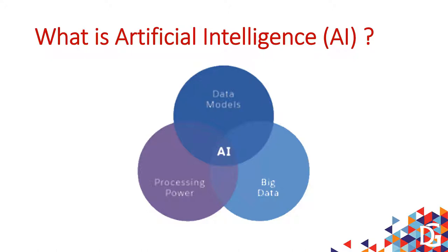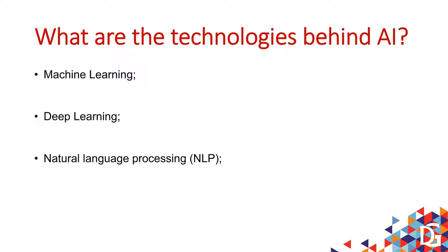Now you understand why today you can build something related to AI — because you have big data, processor power, and good data models. Now you need to understand the technologies behind artificial intelligence. The first one we'll talk about is machine learning. In fact, this is the topic of our session today: how to implement machine learning. I'm going to do a classification analysis using Azure Machine Learning Studio.